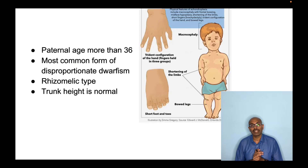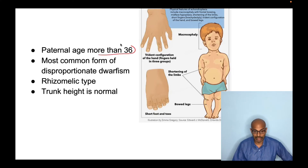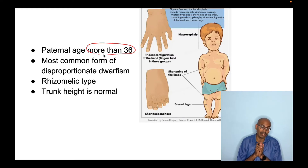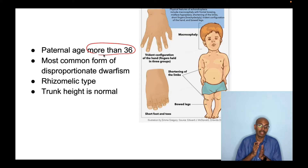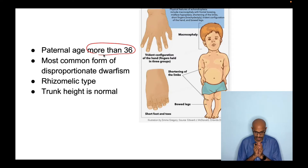What are the risk factors for achondroplasia? A paternal age of more than 36 years increases the risk. If the father is older than 36, there is a higher chance of achondroplasia. Note that maternal age over 35 is associated with Down syndrome, whereas paternal age is linked to achondroplasia.